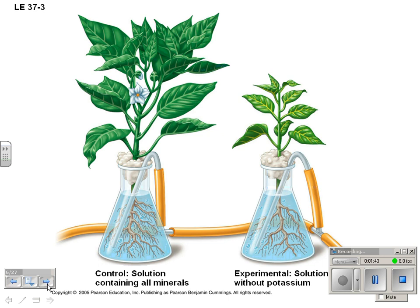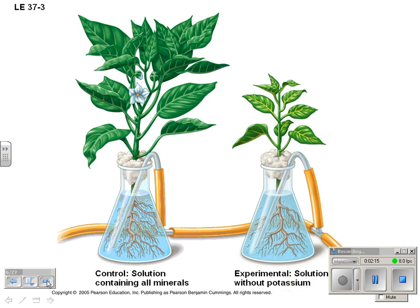Evidence of that was done with hydroponic growth, where the plant is placed in a flask with all the minerals and grows very tall. You could take out potassium, put the solution in without potassium, and you get a much smaller plant. You could do the same with other minerals like nitrogen and phosphorus to see what happens to the plant — a quick experiment to test how plants do with different kinds of nutrition.